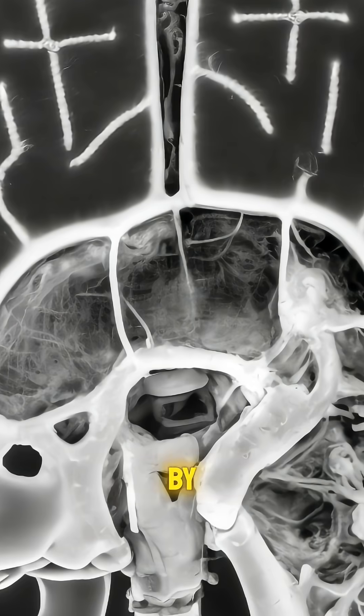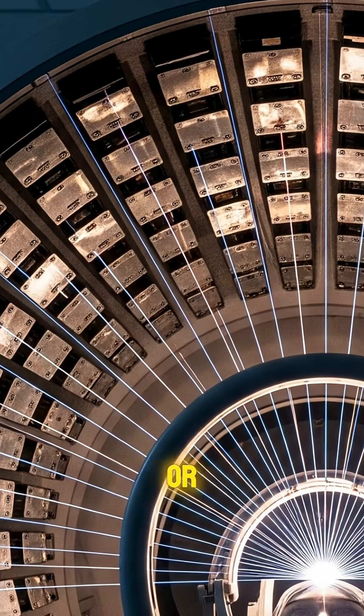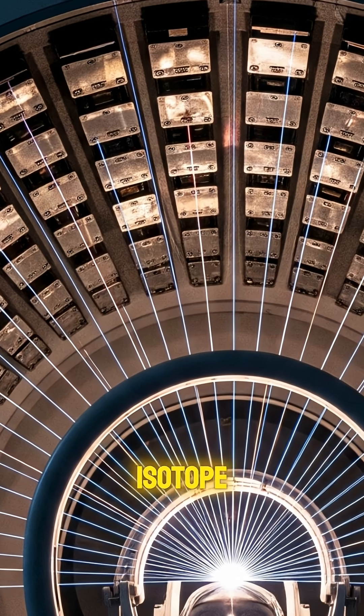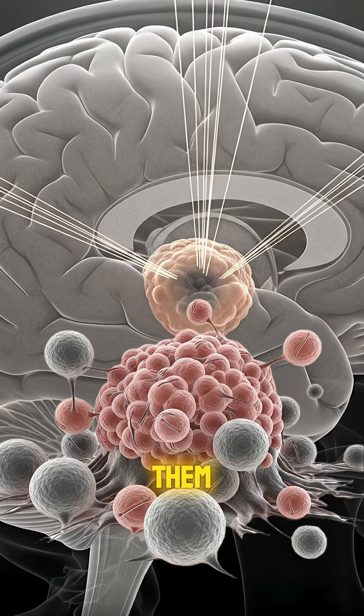The way it works is by delivering highly concentrated gamma rays to a targeted area from 192 or more sources of cobalt-60 isotope radiation in order to damage the cells of a tumor and prevent them from multiplying.